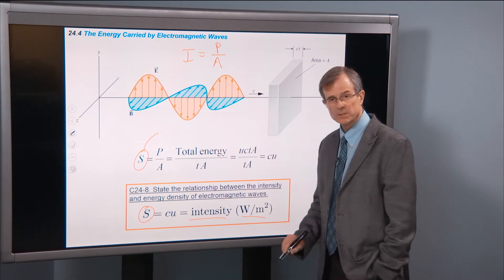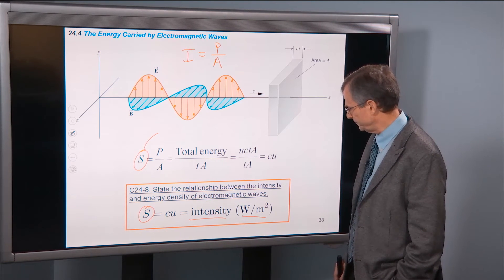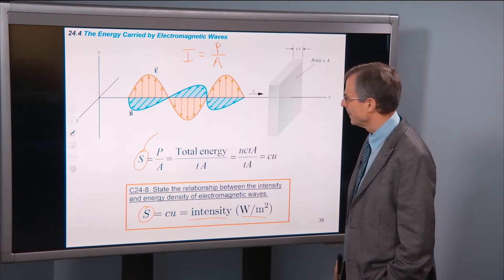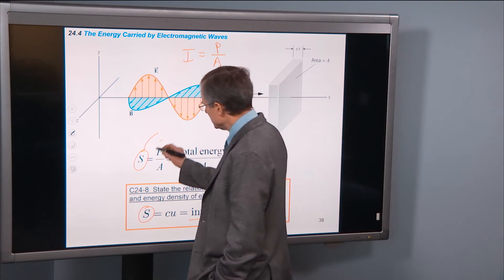And so s is the intensity. It's measured in the same units as sound is. Sound intensity is measured in watts per square meter. Well, the intensity is a power per unit area.